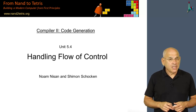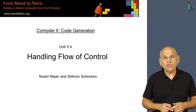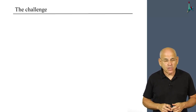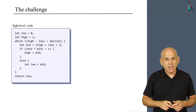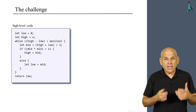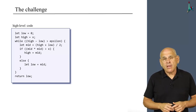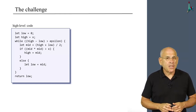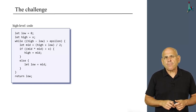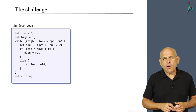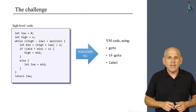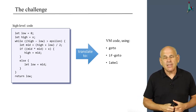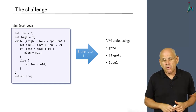Welcome to unit four of this module, in which we're going to talk about the challenge of handling the translation of flow of control into the VM language. We have an example of some Jack code which presumably computes the square root of some given number x using some binary search algorithm. The challenge is translating or re-expressing the semantics captured in the source code into the VM language.